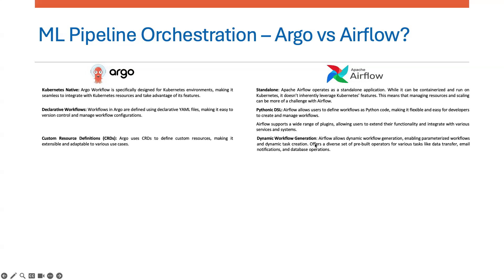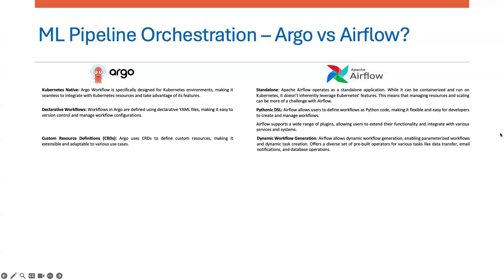Airflow provides dynamic workflow generation, meaning it allows parameterized workflows and dynamic task creation through code, giving you more flexibility and dynamism. It also offers a diverse set of pre-built operators for various tasks — for example, a Postgres operator for database operations, a BigQuery operator for BigQuery tasks, and a Python operator by default. These built-in features make Airflow very flexible.